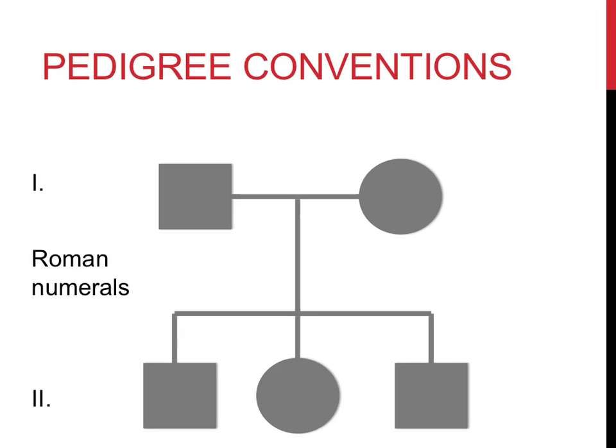To identify individuals without merely pointing, each square and circle needs to be identifiable. The first step is by using Roman numerals, which are used to exhibit different generations in pedigrees. The second way individuals can be identified is by using Arabic numerals. When you use Roman numerals in conjunction with Arabic numerals, you can identify a single person quite easily.